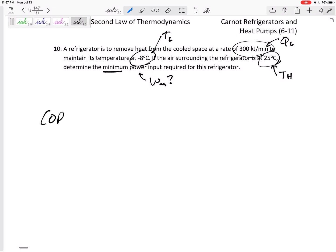Let's see. Coefficient of performance for a refrigerator is QL over W in, or here we go: one over TH over TL minus one. That's the equation I'm going to use to find the coefficient of performance, then I'm going to find W in from that.